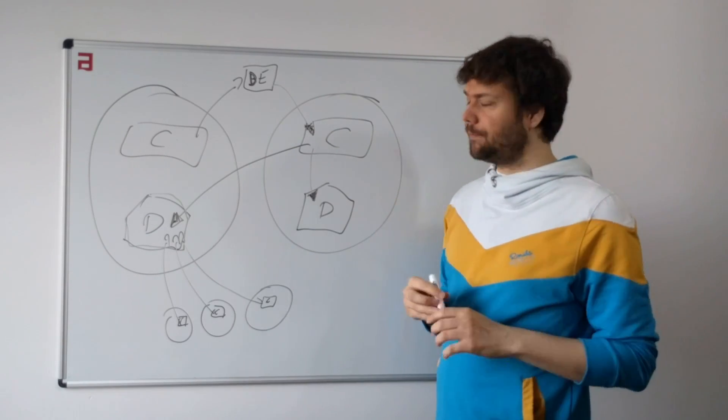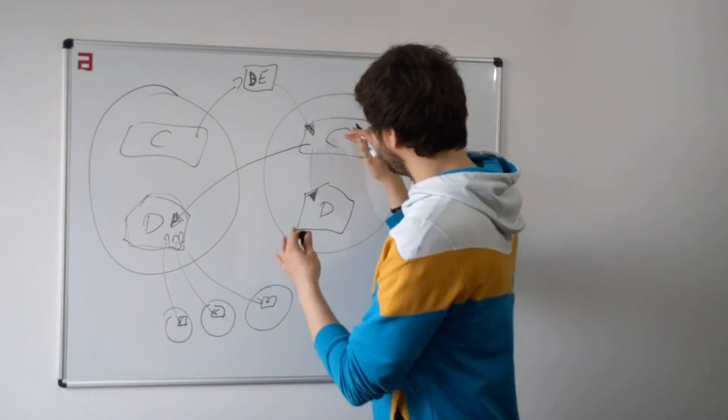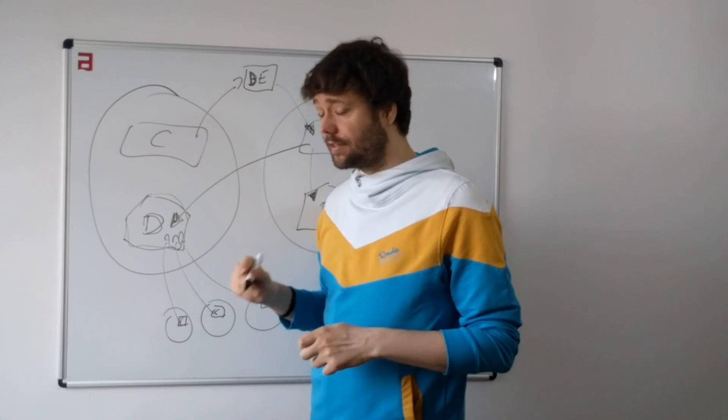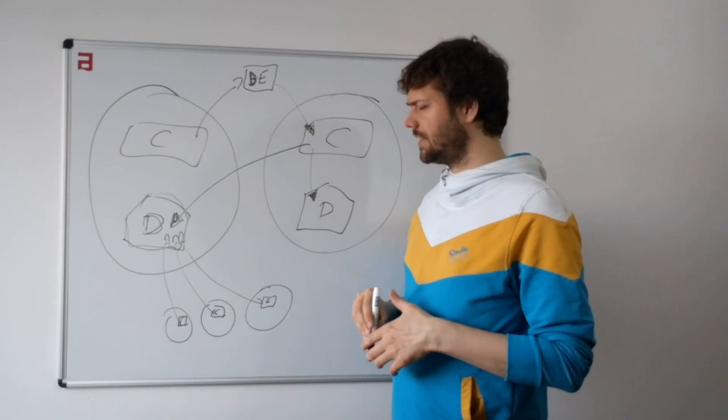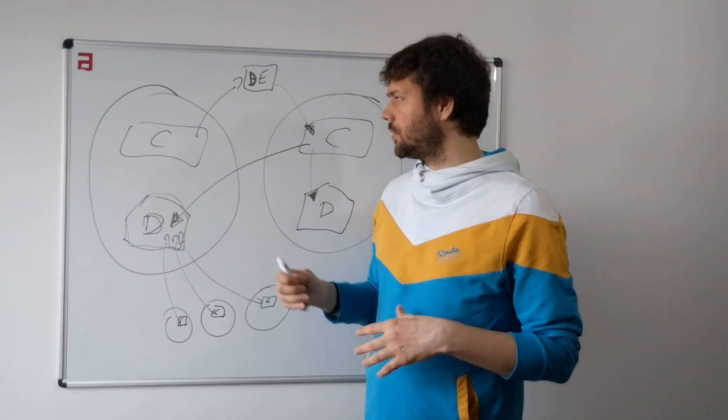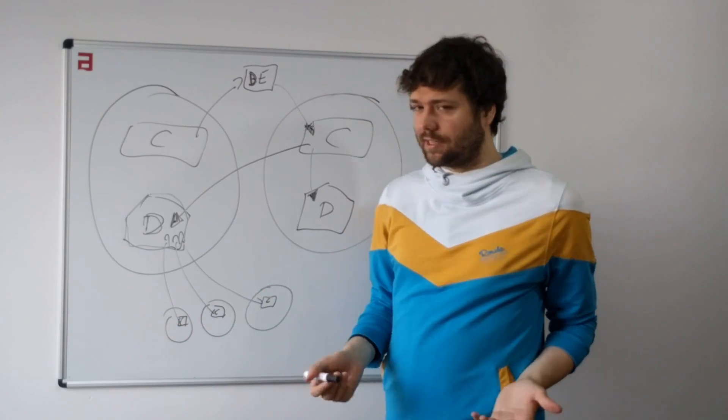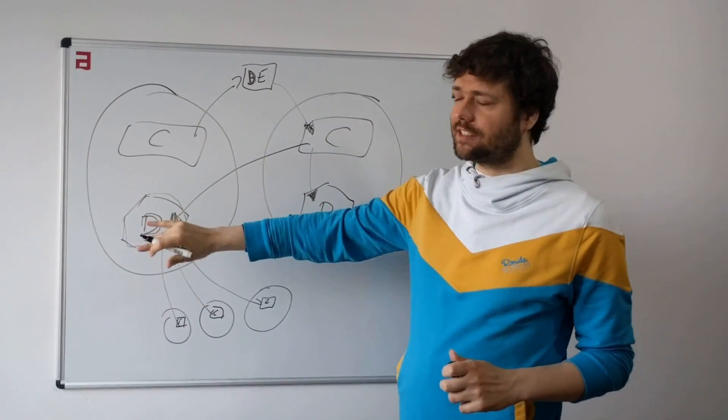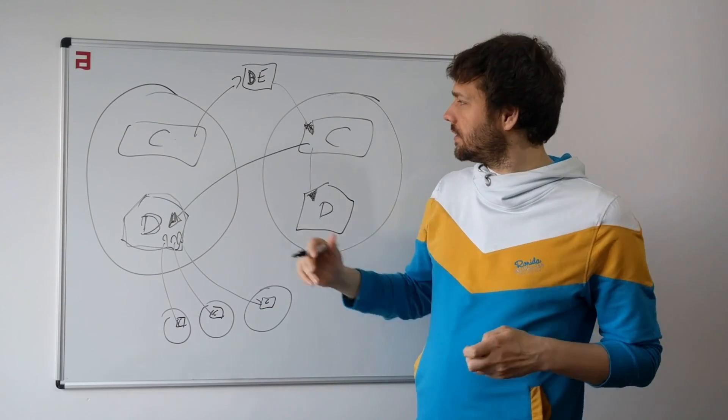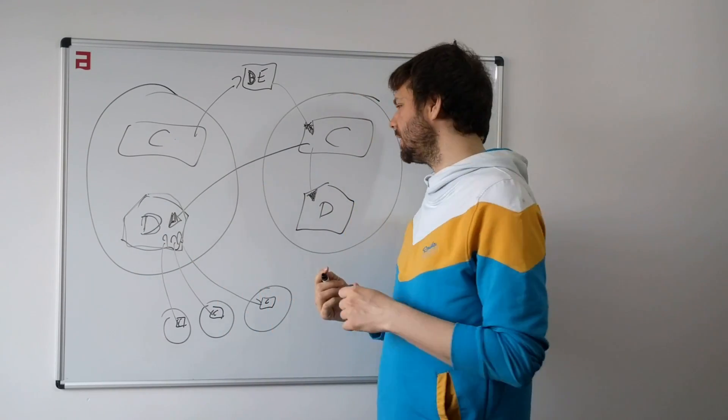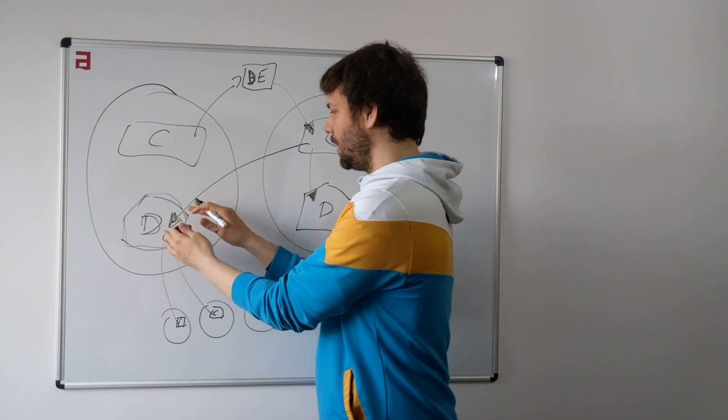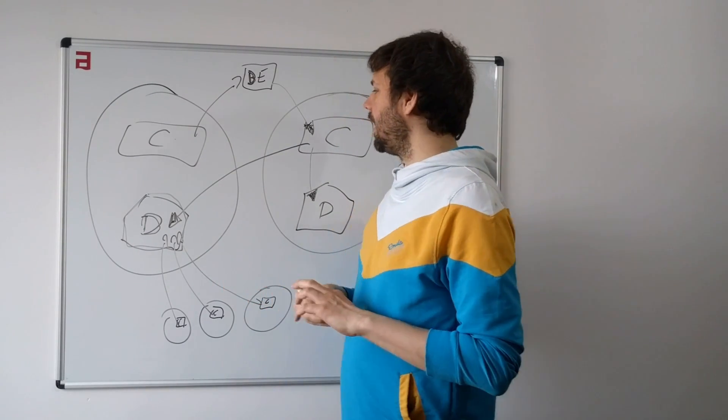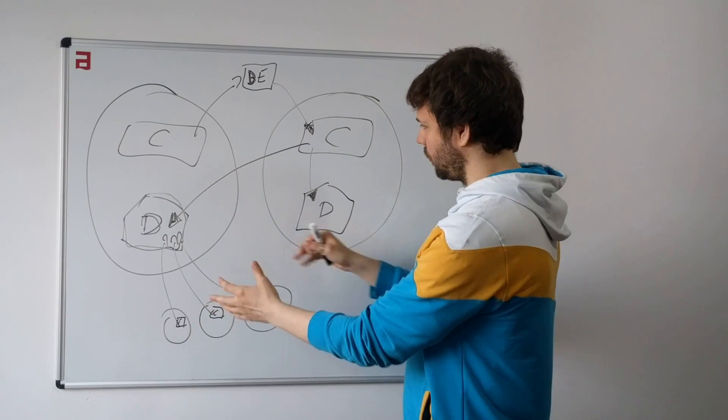When you do that, you move the interface. When this code is looking into this data, then your database schema is the interface and you can't change it easily because other parts depend on that. But you would like to change it easily. You would like this bounded context to own the data and change it in any way, right? If it's needed for performance, for scalability, or whatever reason, you would like to maybe even change and move to a completely different database. But you can't do that if there are other parts of code reading here.